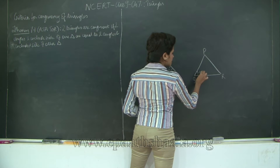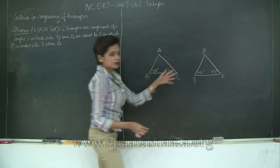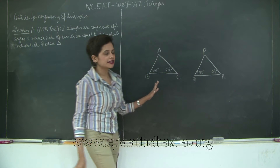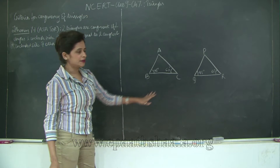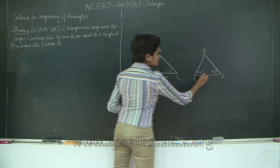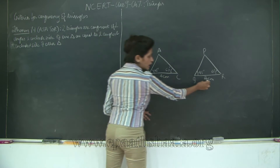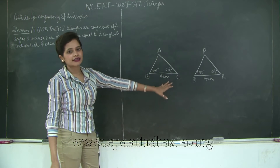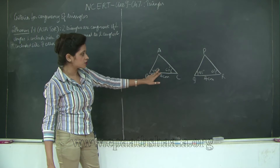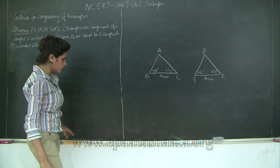Again if I have triangle PQR with angle Q as 45 degrees and angle R as 60 degrees, and if you try to place one on top of the other, you will notice that ABC will completely overlap PQR and vice versa. So given any two angles and the side included between these two angles, if they are equal then the two triangles are congruent. It is very important that the two angles and the included side between them be equal.